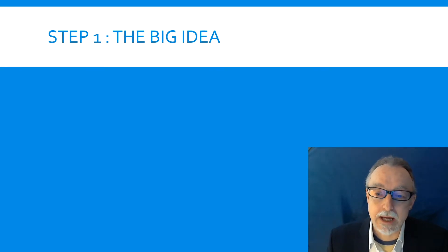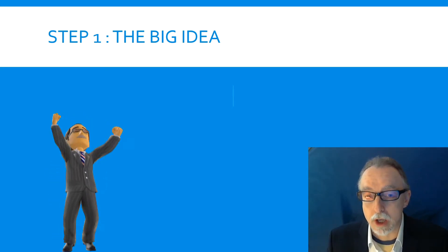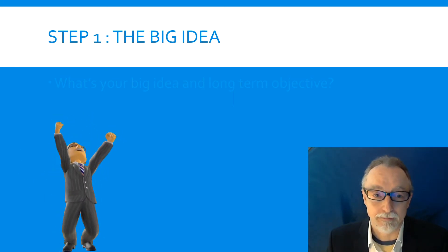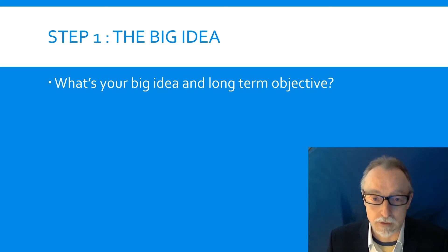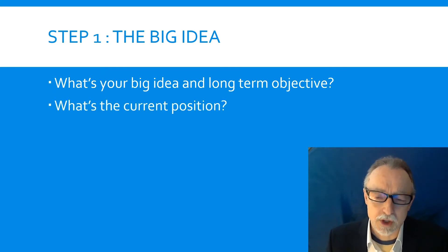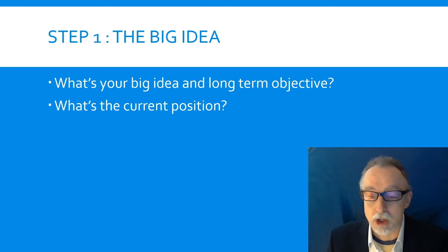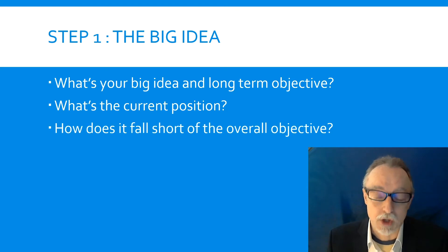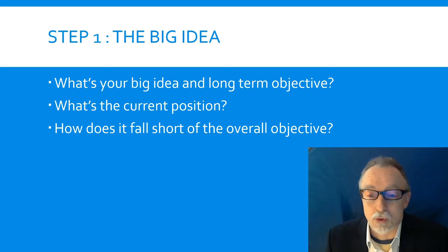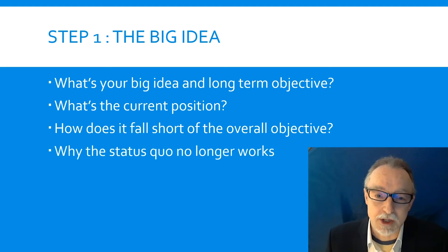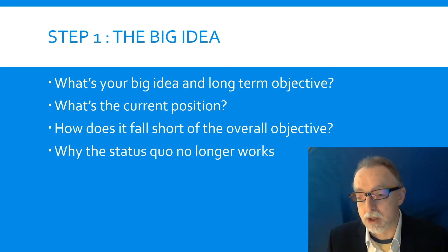Step one: the big idea. After all, that is why you are proposing a strategy — you have a big idea. What is the long-term objective which it serves? You've also got to set out the current position, because when you are proposing a strategy you are proposing a change — a change from the current position. So you have to explain how the current position falls short of the overall objective, whether that's for your business, your adventure, or venture of some sort. In other words, why the status quo won't do. That is the context in which you are proposing your strategy.